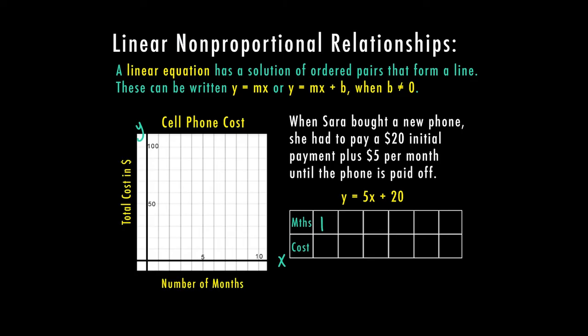When it is one month, we pay 1 times 5 is 5 plus 20, which is 25. Month 2, we pay 2 times 5 is 10 plus 20, which is 30. Month 3 is 15 plus 20, which is 35. Month 4 is going to be $40. Month 5 is going to be $45. And month 6 is going to be $50. You can tell here that every month it increases by $5.